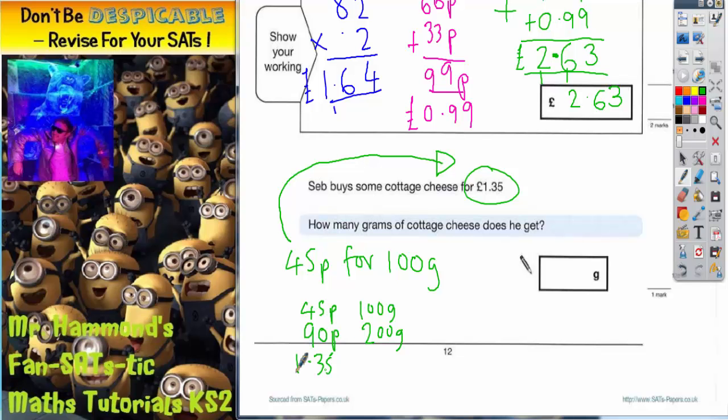Which coincidentally is what we're after, so that's going to give him an extra 100 grams, so he's now on 300 grams. So every time he spends 45p, he gets an extra 100 grams.